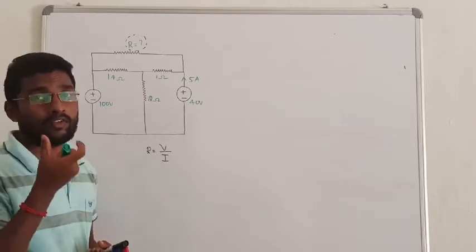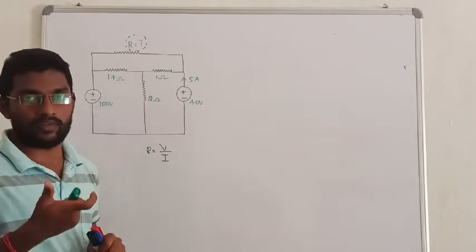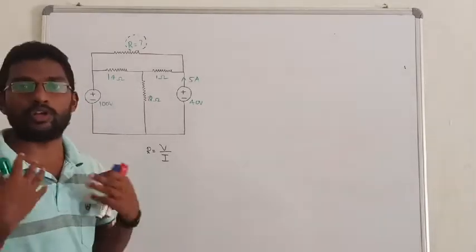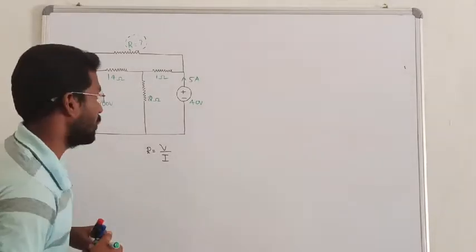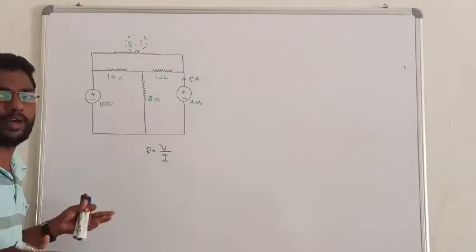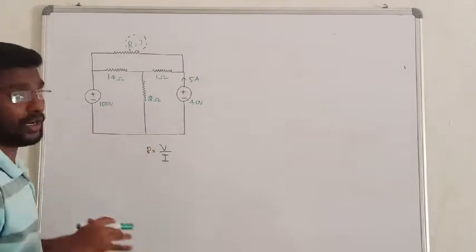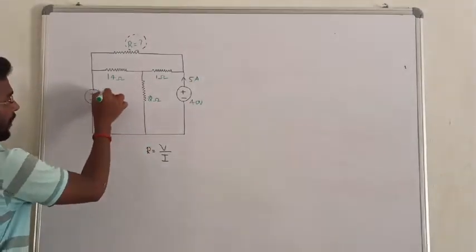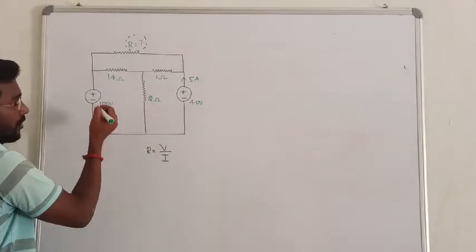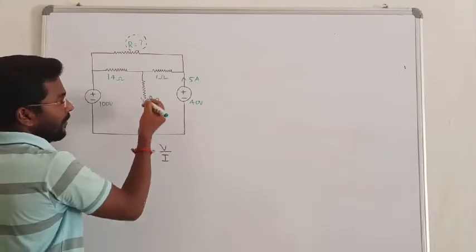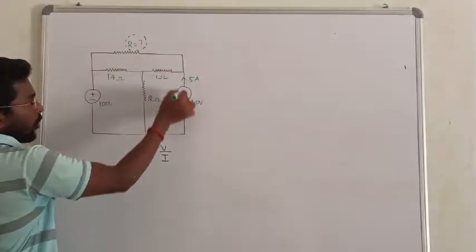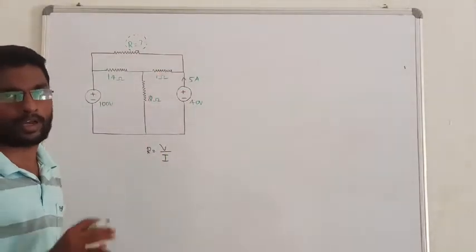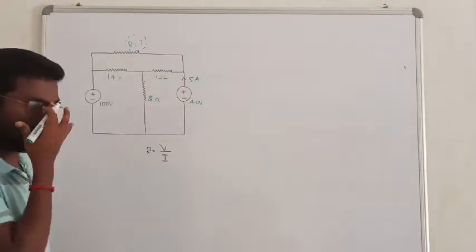Next, I think we use KVL. Where do we apply KVL? Any loop you want — you can apply KVL. You can apply it right now. Here we have a loop and another loop. You can apply KVL to this loop, or after the loop you can apply KVL.